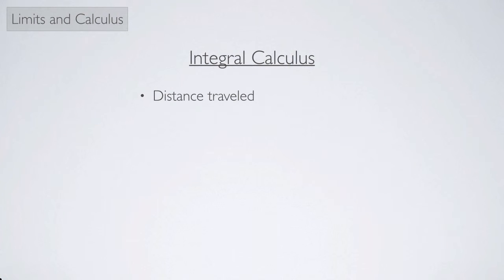So we can look at the distance traveled, and that would be maybe something in physics. We can look at the volumes of irregular shapes. You probably know how to find the volume of a sphere or a cube, but we can look at some shapes that are not so easy to figure out.